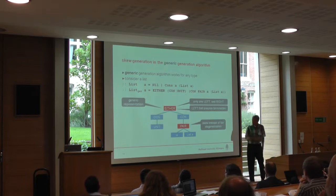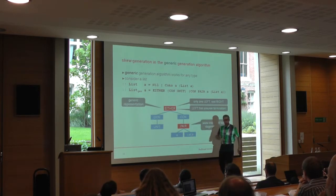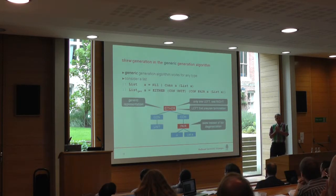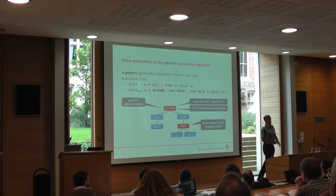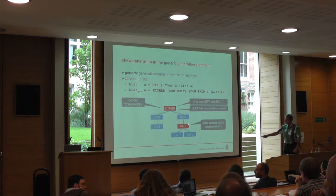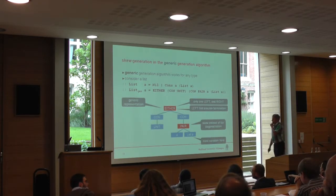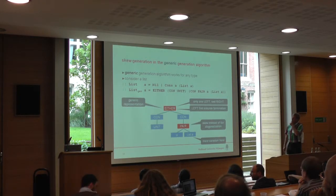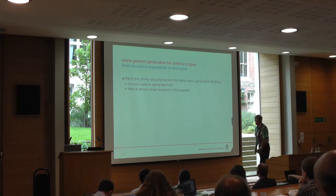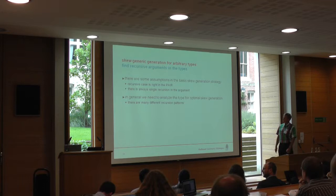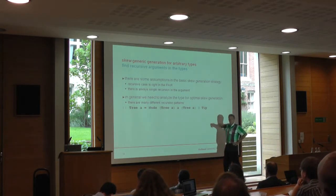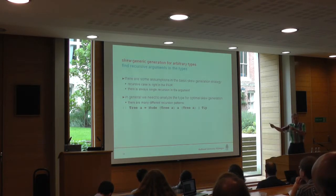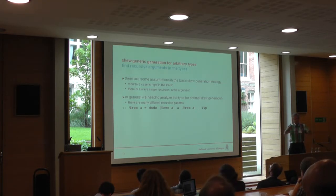Here is where the skew factor matters — the elements of the list and the recursive situation, the combinations of the constructors. You need to start combining with many recursive situations in order to increase the length. In general there can be all kinds of recursive situations I have to handle. For instance, if I have a tree, there are two recursive situations, and I have to find the terminating situation and the recursive situation — maybe there are more recursive situations, and I have to take care of all of them.